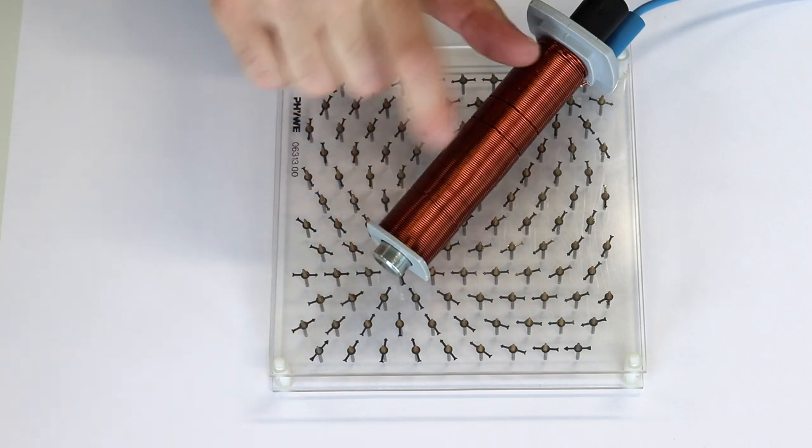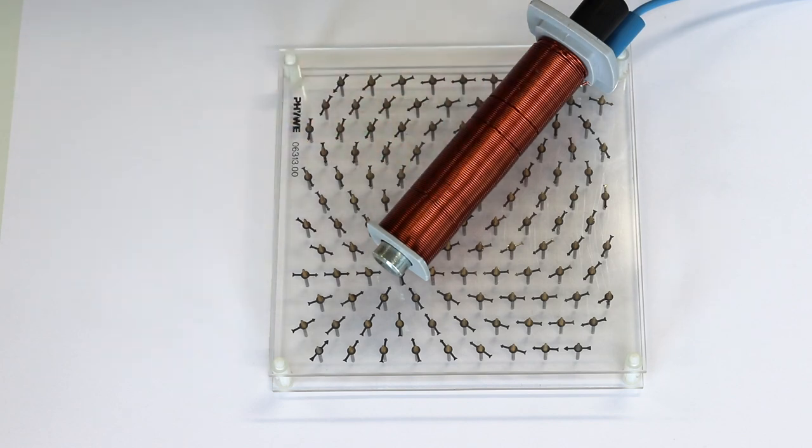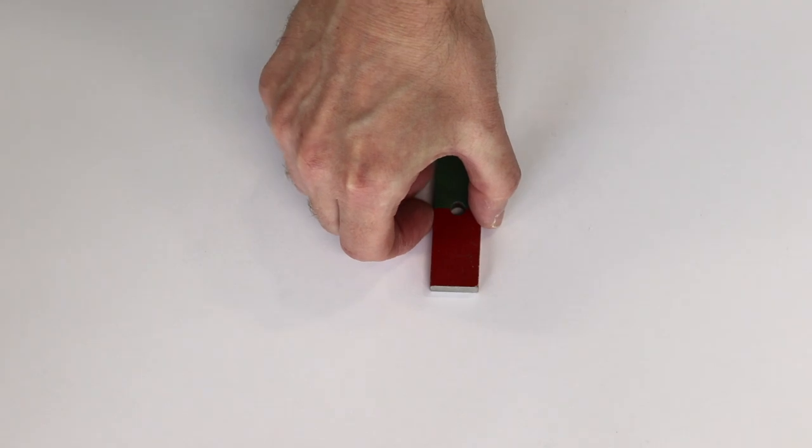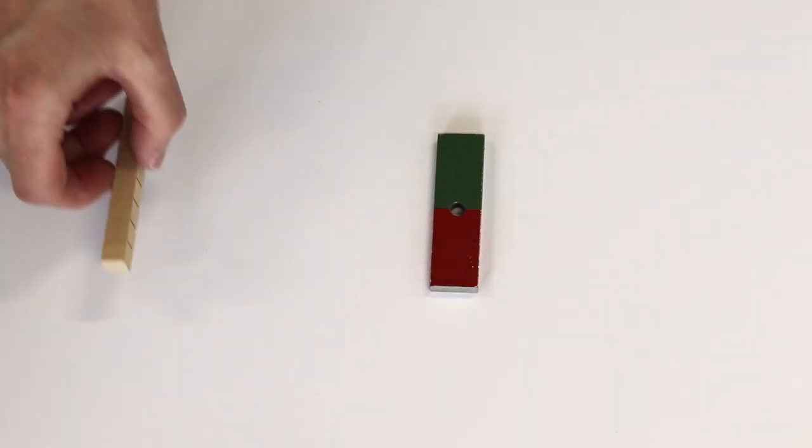So that means that the magnetic poles have flipped for the electromagnet. Another way of visualizing the magnetic field is to sprinkle iron filings around the magnet.